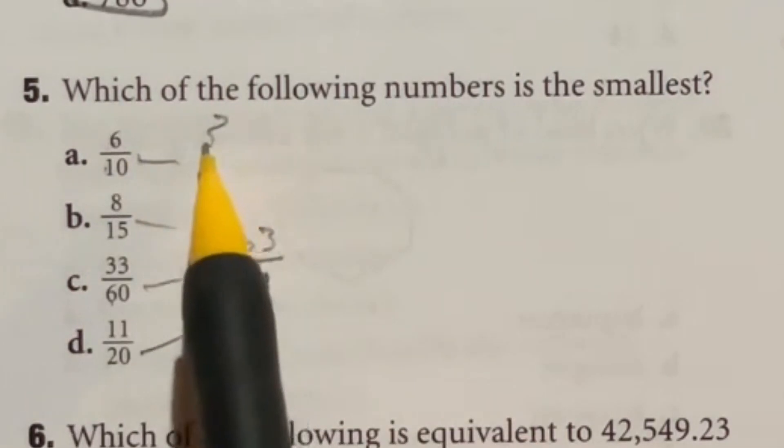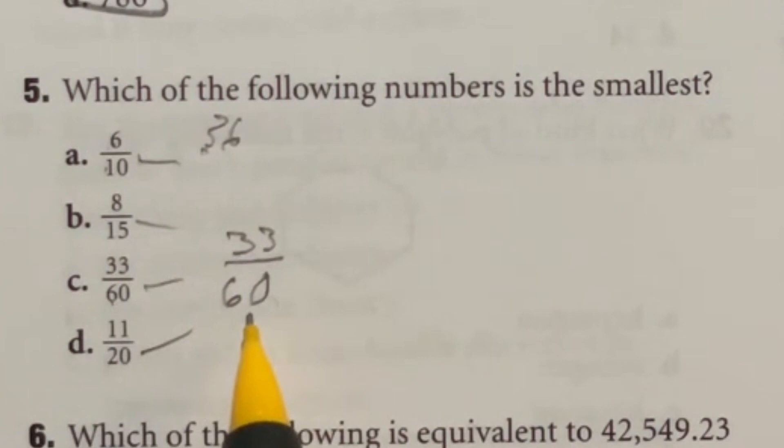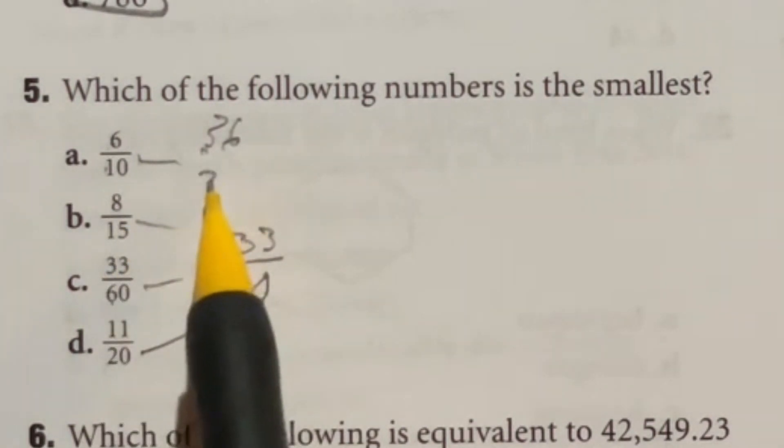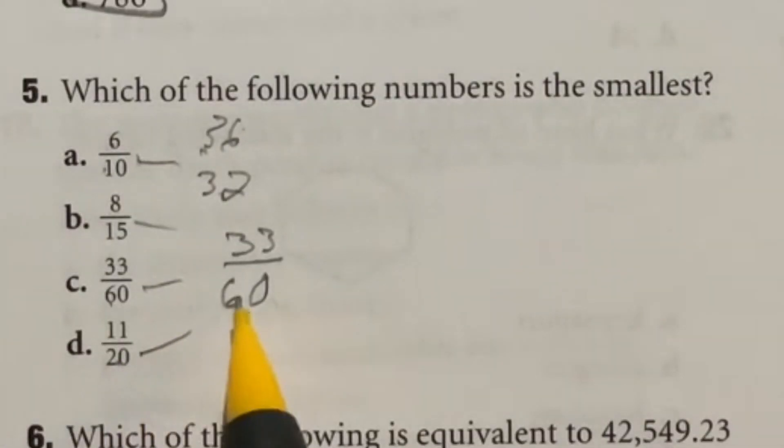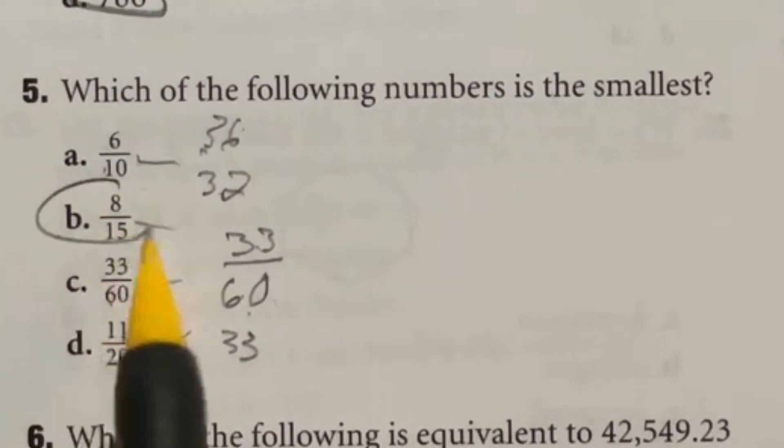Six times six is 36. Then we know that 15 times four gives us 60, so eight times four gives me 32. So now we have 36, 32, 33. And 20 times three would give us 60, so 11 times three will also give us 33. So out of these top numbers here, the one that is the smallest is B, eight over 15.